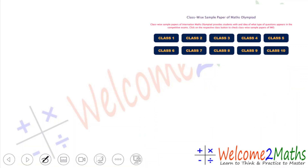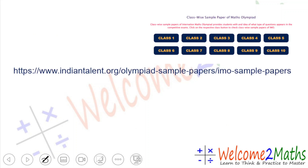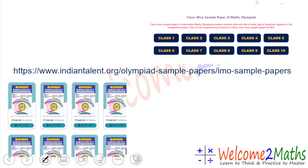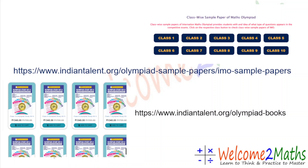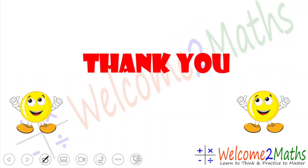The first is sample papers — they have class-wise sample papers. Click on this link and you will get class-wise sample papers, and then you will have a clear idea about the question pattern. For previous year question papers and the Olympiad workbook, kindly visit their website. You will get every detail. These two links will help you a lot in the Olympiad exam. Next time we will learn something new. Till then take care of yourself. Bye-bye!